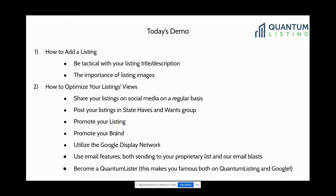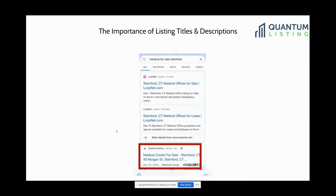We really love helping people with the Quantum Lister program. It makes you famous both on Quantum Listing and Google — not only will people see the blog on our site, but a very large number of people who have become Quantum Listers, when you search their name on Google, the Quantum Lister blog is one of the first things that pops up. Compared to other pages, this is like an interview about you — very good exposure. So David, do you want to give a quick overview of listing titles and descriptions?